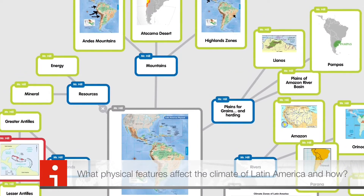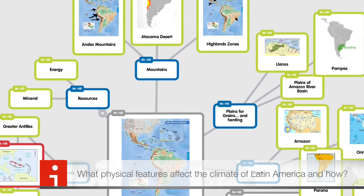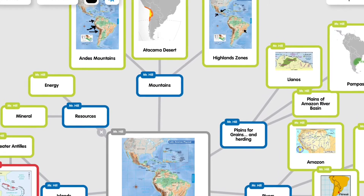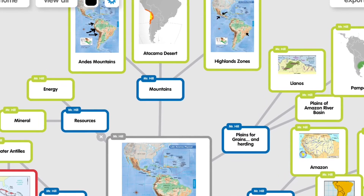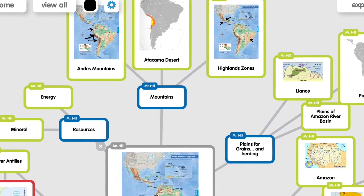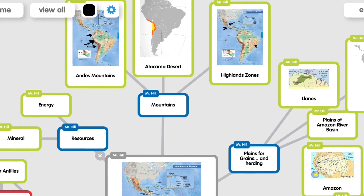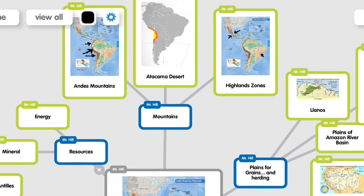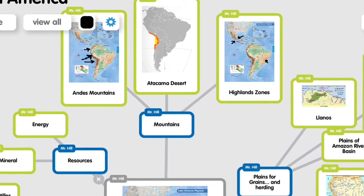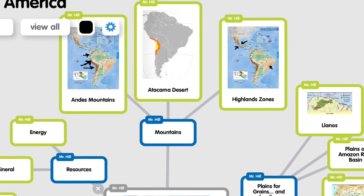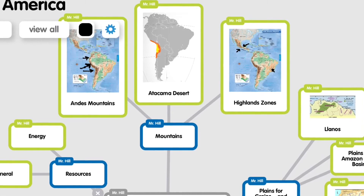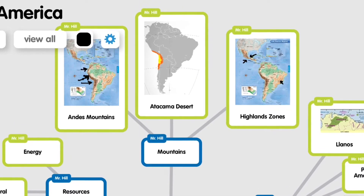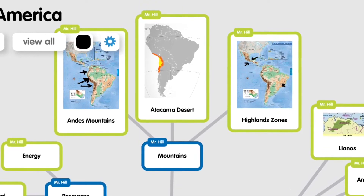We're looking at the physical geography of Latin America. Within Latin America, you've got various elements in regards to their physical geography which makes it unique. You've got mountains, you've got plains for grasses and livestock, you've got rivers, you have islands in the Caribbean, and then we're also going to look at the resources that are available within Latin America that make up its physical geography.